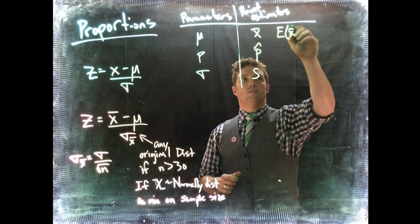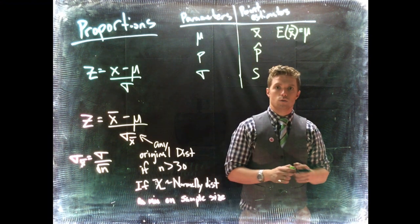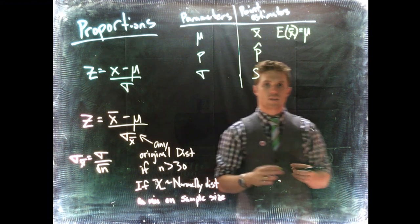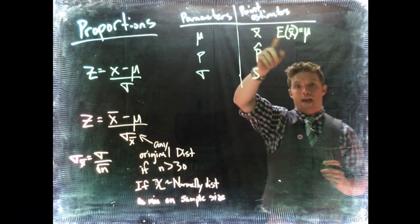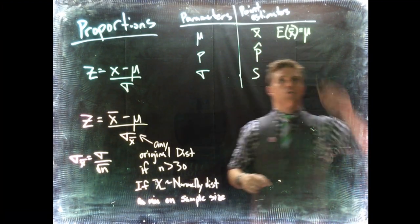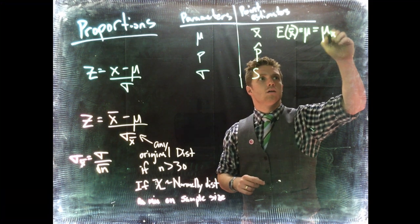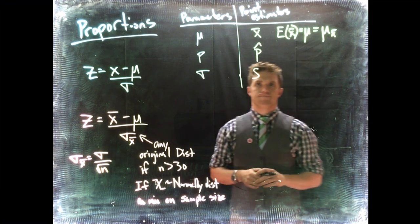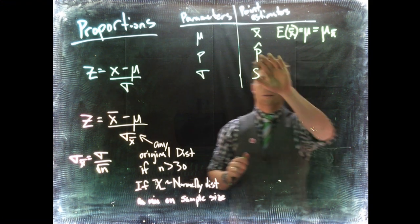We know that the expected value of X-bar equals mu. If we sampled a bunch of times from the population and took those averages, those averages would eventually average out to be the population mean. You'll see this written as mu X-bar.